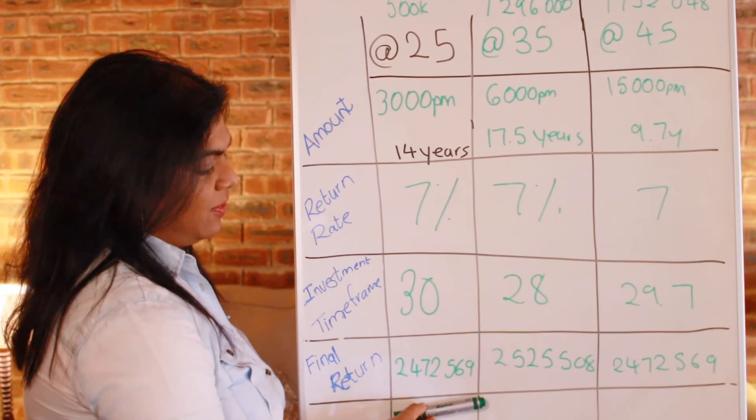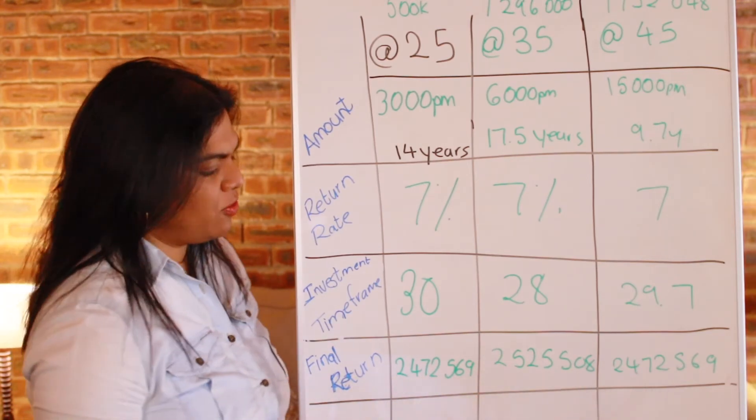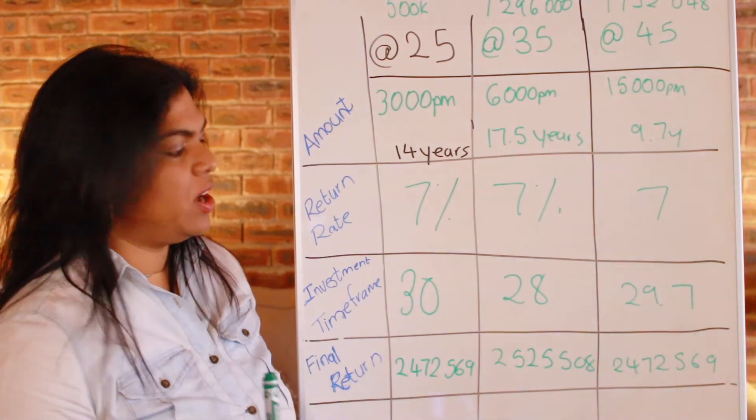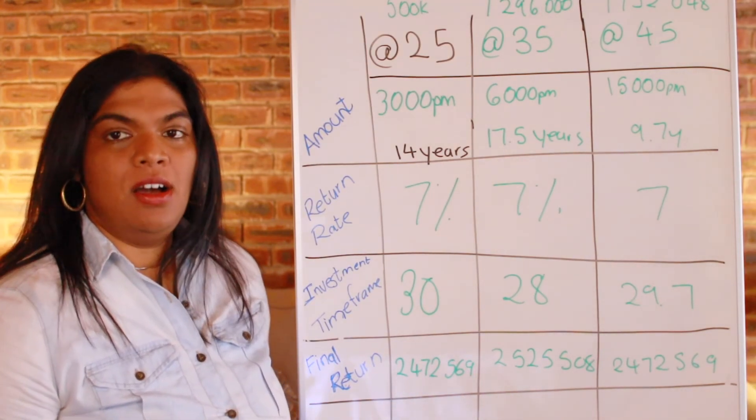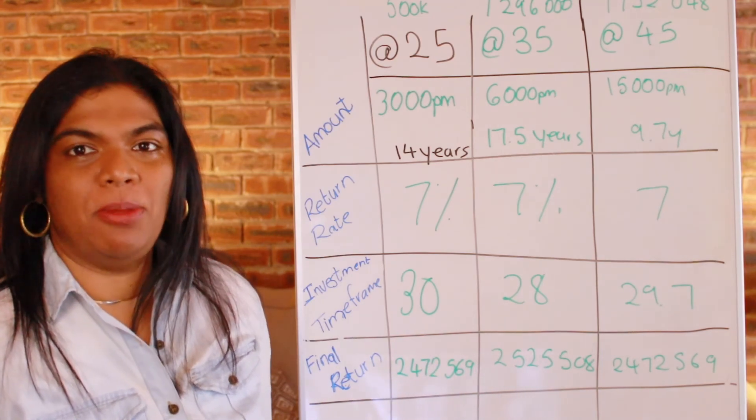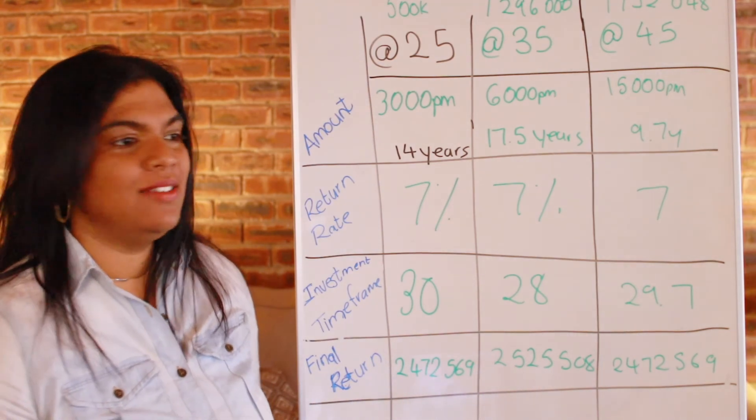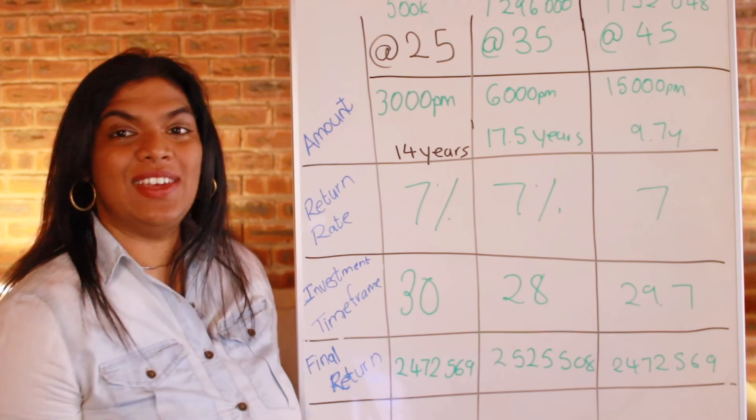And all of which is giving you a rough return of around 2.5 million over a period of 28 to 30 years. So now you can see the value of time on the market. You got to start early. If you don't have these kind of figures to start investing, start with something.